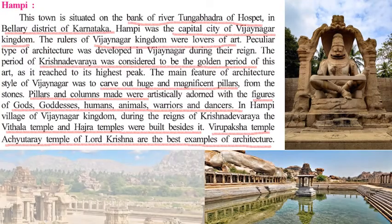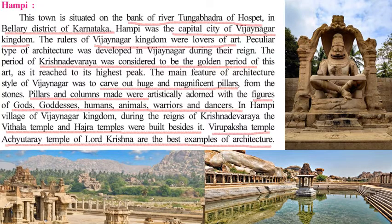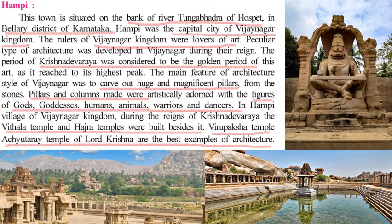Hampi is a town situated on the bank of the river Tungabhadra in the Hosapete taluka of Bellari district, Karnataka. Hampi was the capital city of the Vijayanagar kingdom. During the reign of Krishnadevaraya, it was considered the golden period of art. Their speciality was to carve out huge and magnificent pillars from stone, artistically adorned with figures of gods, goddesses, humans, animals, warriors, and dancers. The Vittala Temple, Hazara Temple, Virupaksha Temple, and Achyuta Temple of Lord Krishna are the best examples of Hampi's architecture.